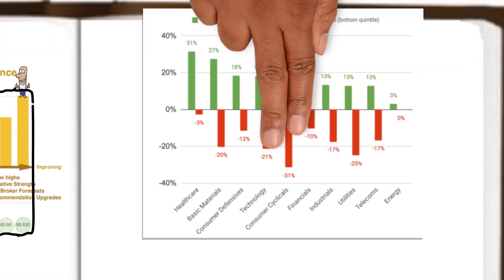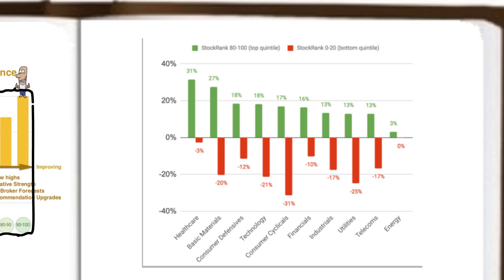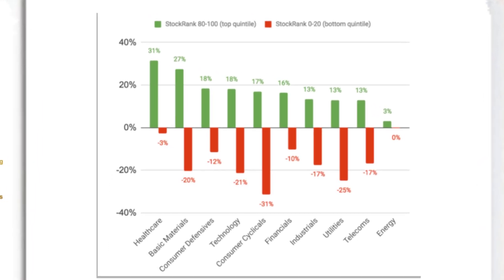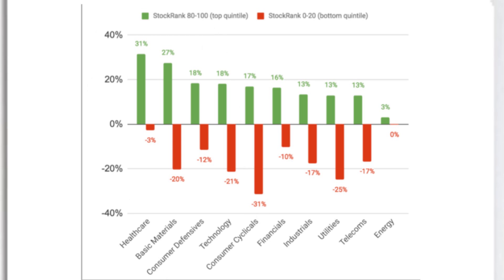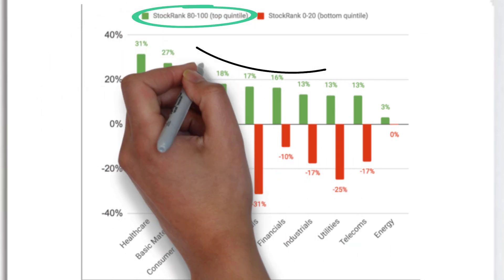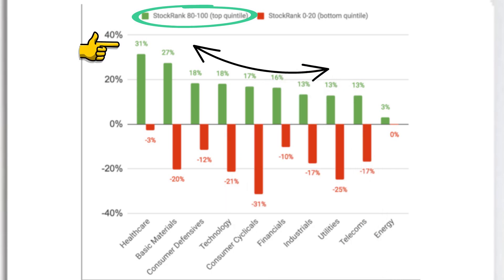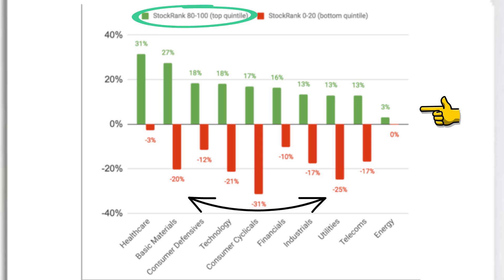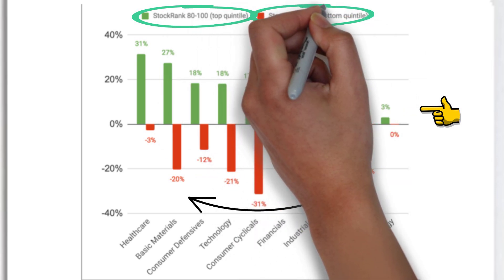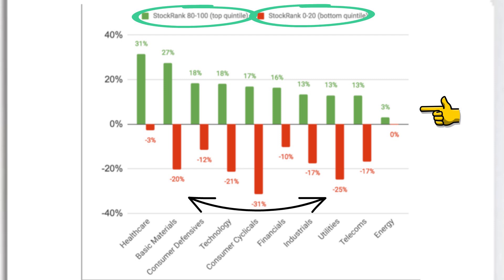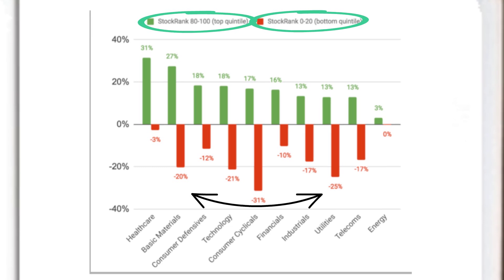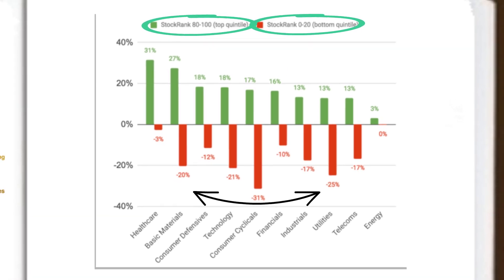Using these combined QVM factors, we can see that benefits are seen across a broad range of sectors too. The stocks within the 80 to 100 stock rank range saw a predominantly even distribution across the sectors, with healthcare showing average annual returns of 31% through to energy returning an average 3%. On the opposite side, stocks which were given a factor score of between 0 to 20 saw a sporadic loss distribution of between 0 and 31%, but although sporadic, none of the sectors within this low stock rank group saw a positive return.